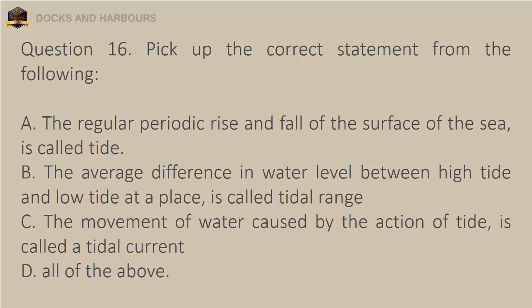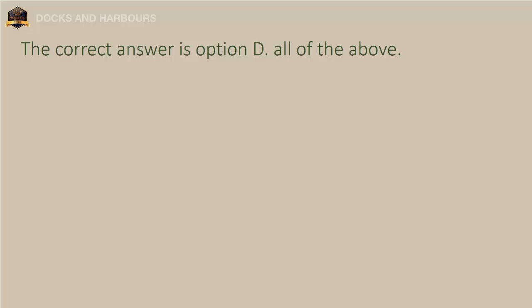Question 16. Pick up the correct statement from the following: a. The regular periodic rise and fall of the surface of the sea is called tide. b. The average difference in water level between high tide and low tide at a place is called tidal range. c. The movement of water caused by the action of tide is called a tidal current. d. All of the above. The correct answer is option D: All of the above.